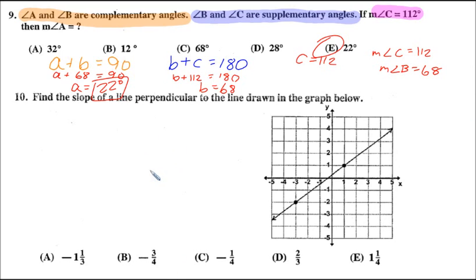Number 10, find the slope of the line perpendicular to the line drawn in the graph below. We're given a graph, and we're given two points. We can simply do this whole rise over run thing to find the slope of this.